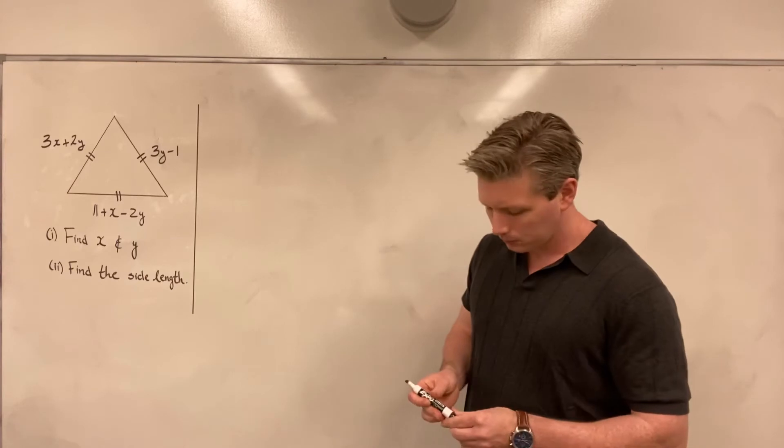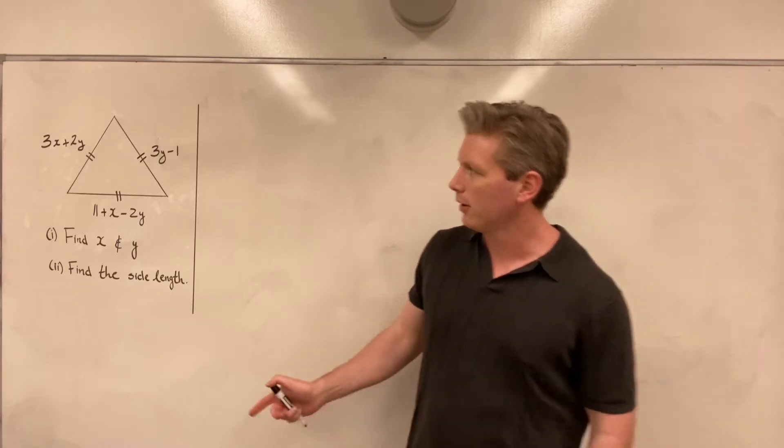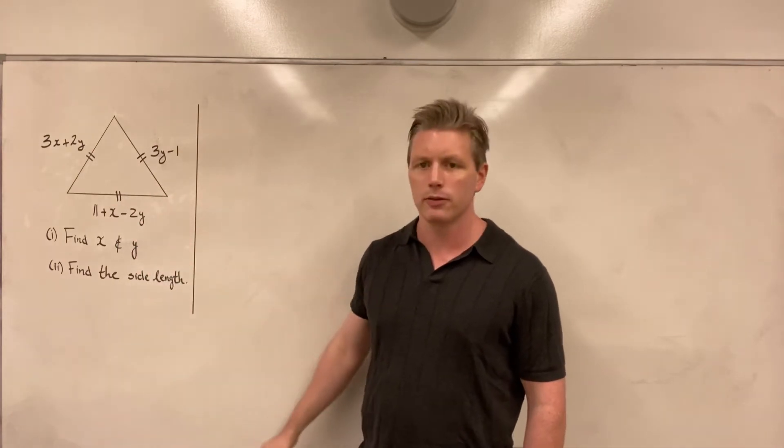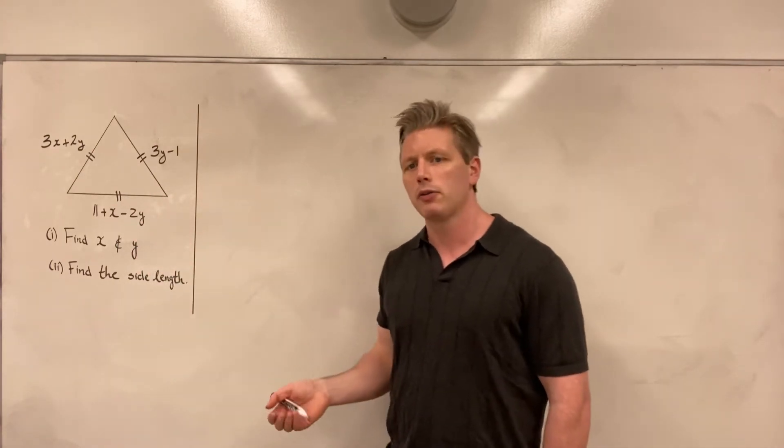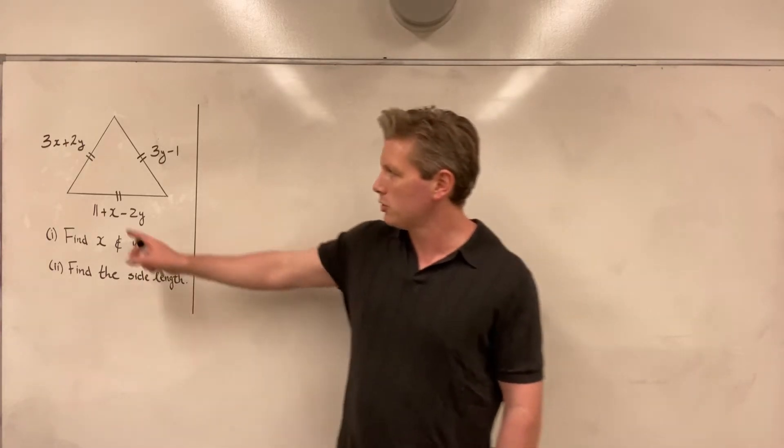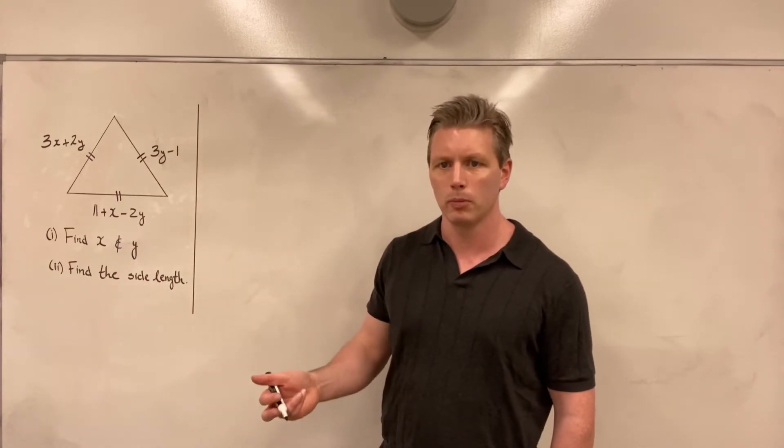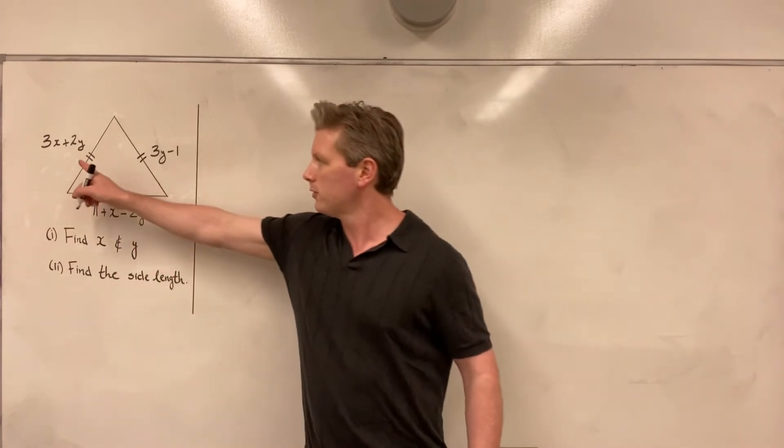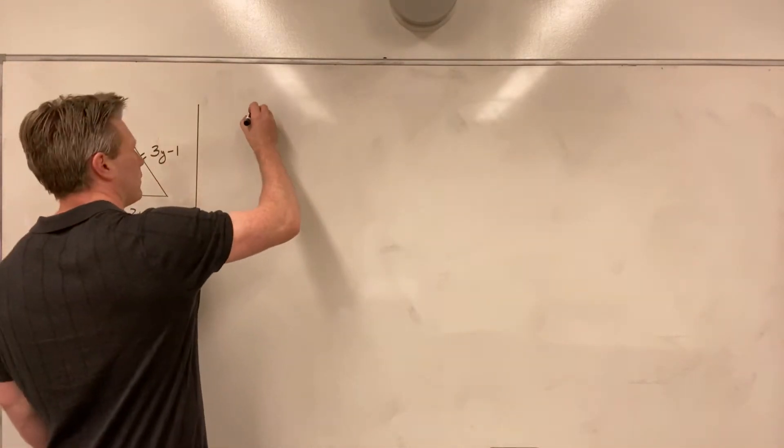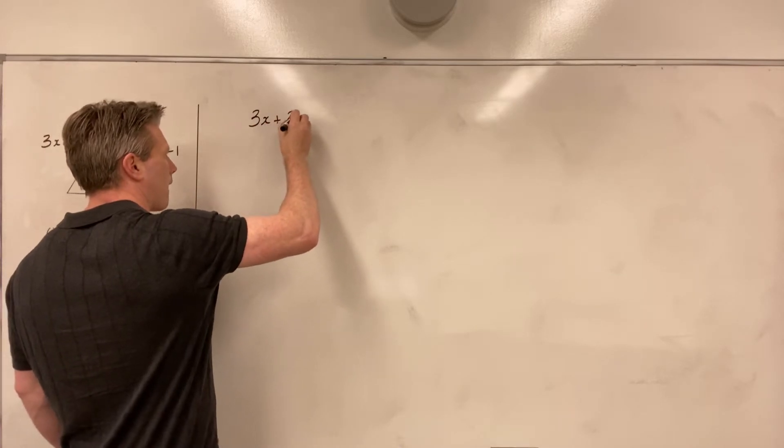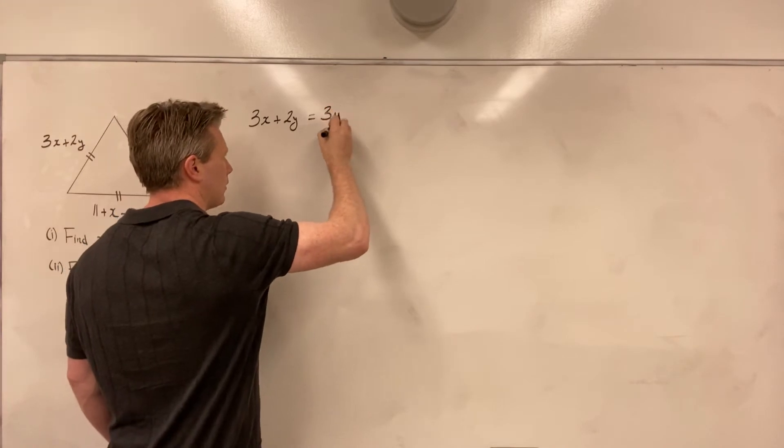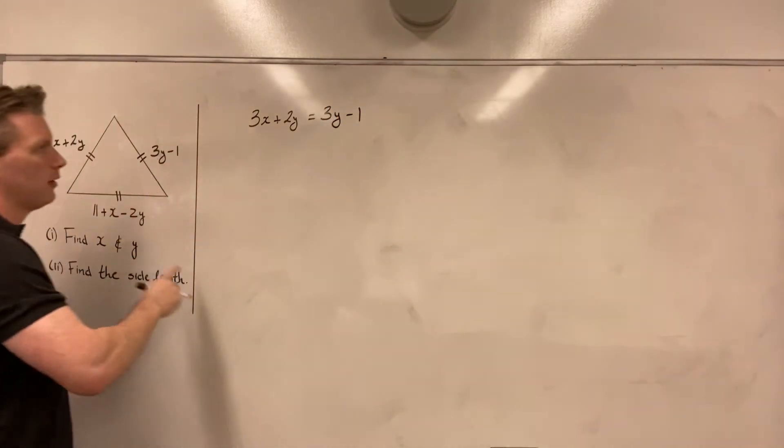So looking at the problem, I have side lengths of 3x plus 2y, 3y minus 1, and finally 11 plus x minus 2y. I have an equilateral triangle, so I know that all three of these sides are equal. And so what I'm going to do is choose two of the sides and equate, and in that way form an equation. So I will choose these two sides to begin with. So I have that 3x plus 2y is equal to 3y minus 1. Again, it's an equilateral triangle, and therefore I know that the sides are equal.